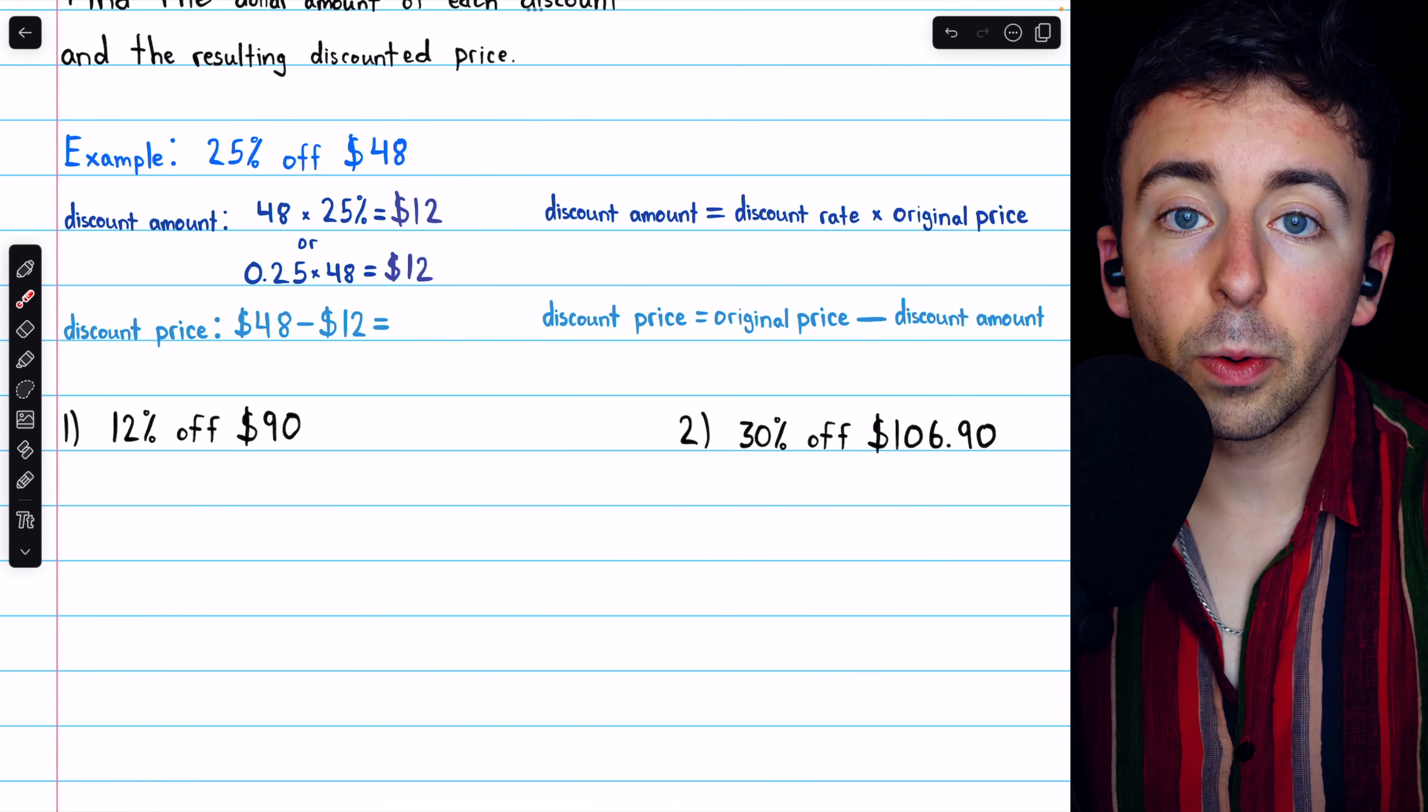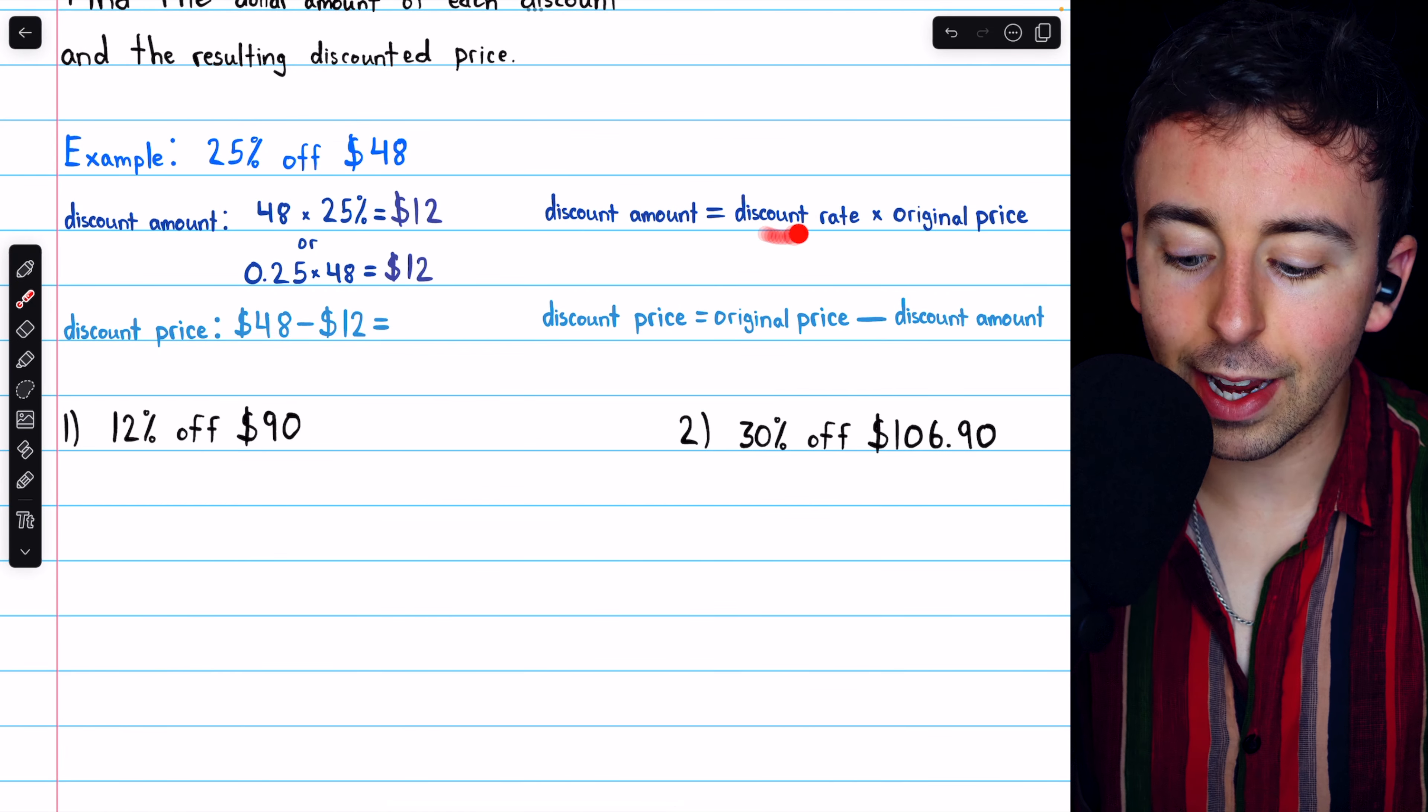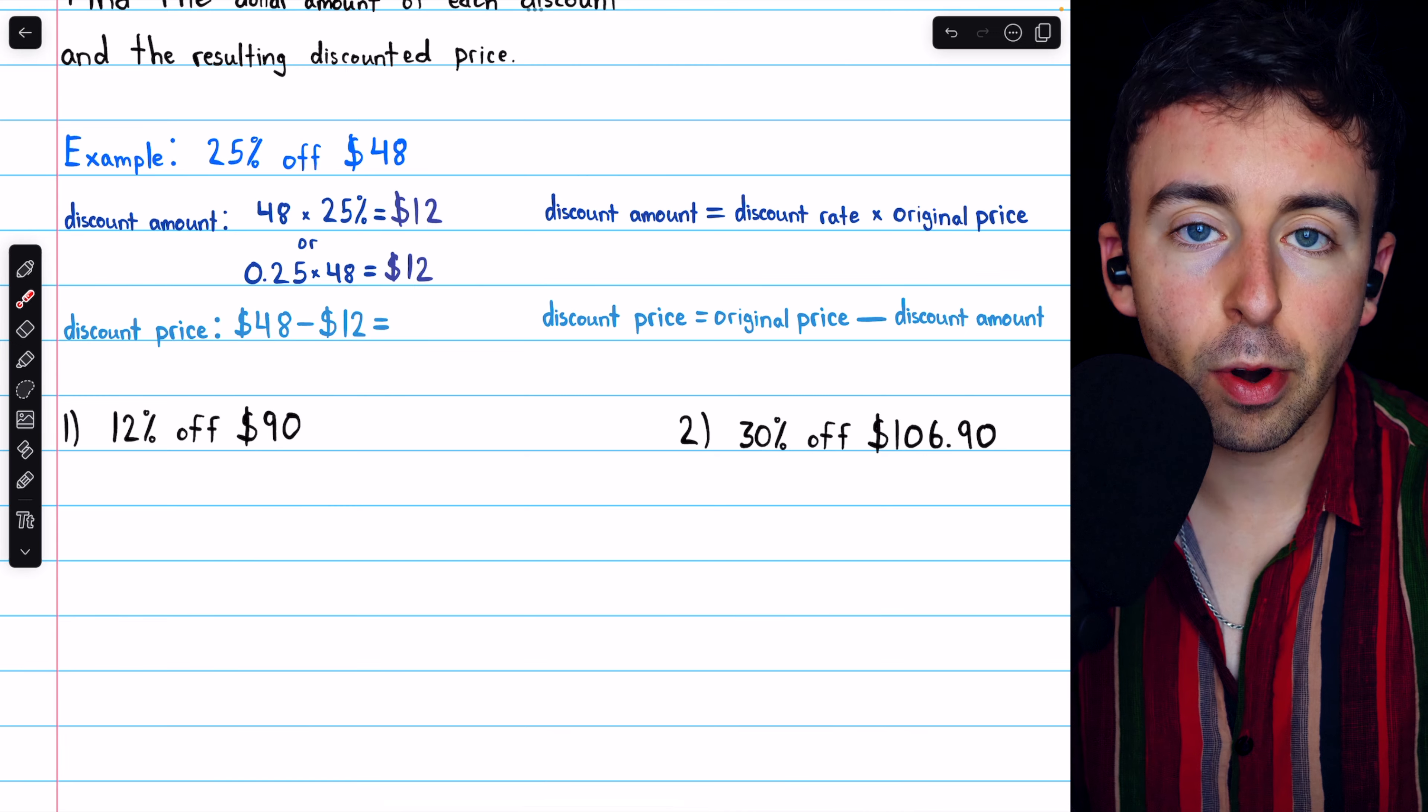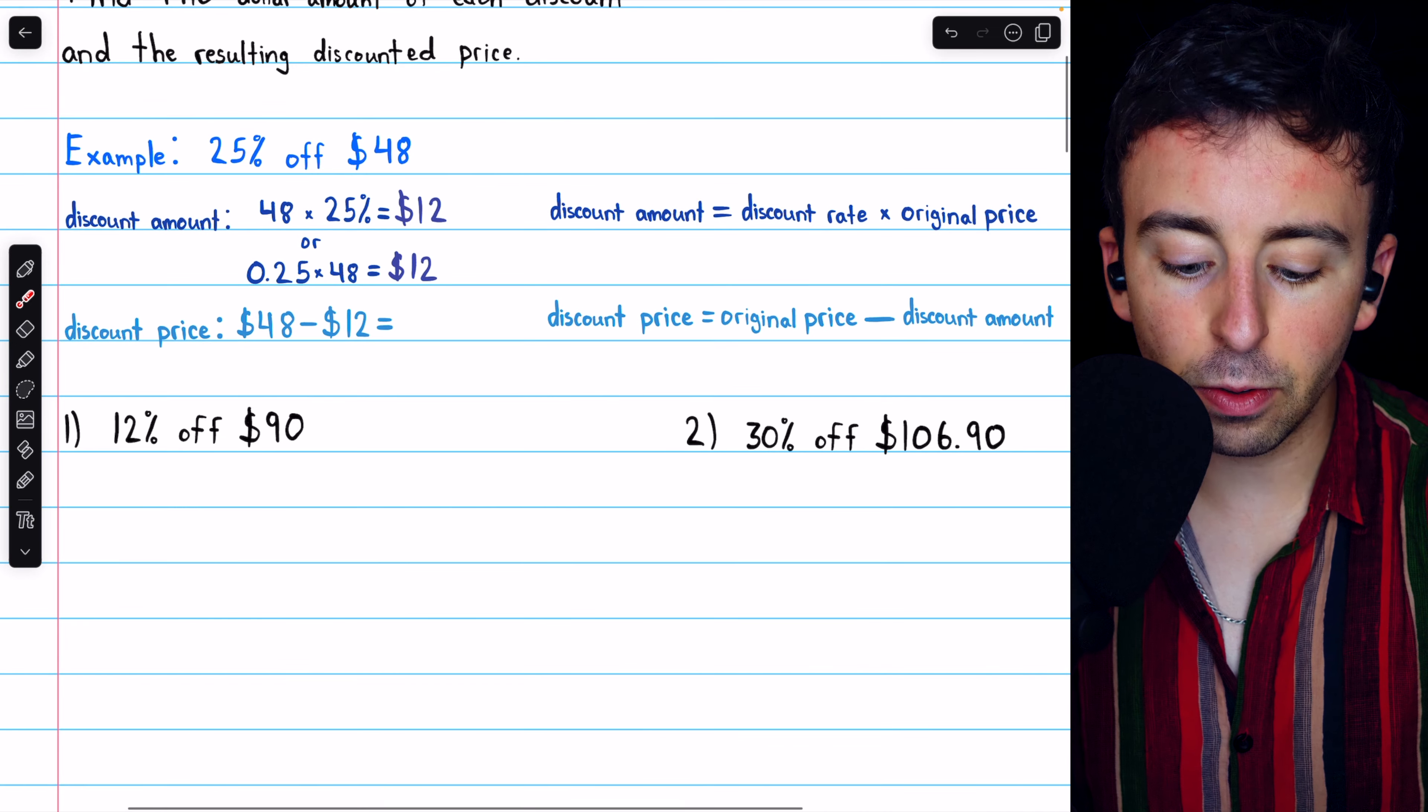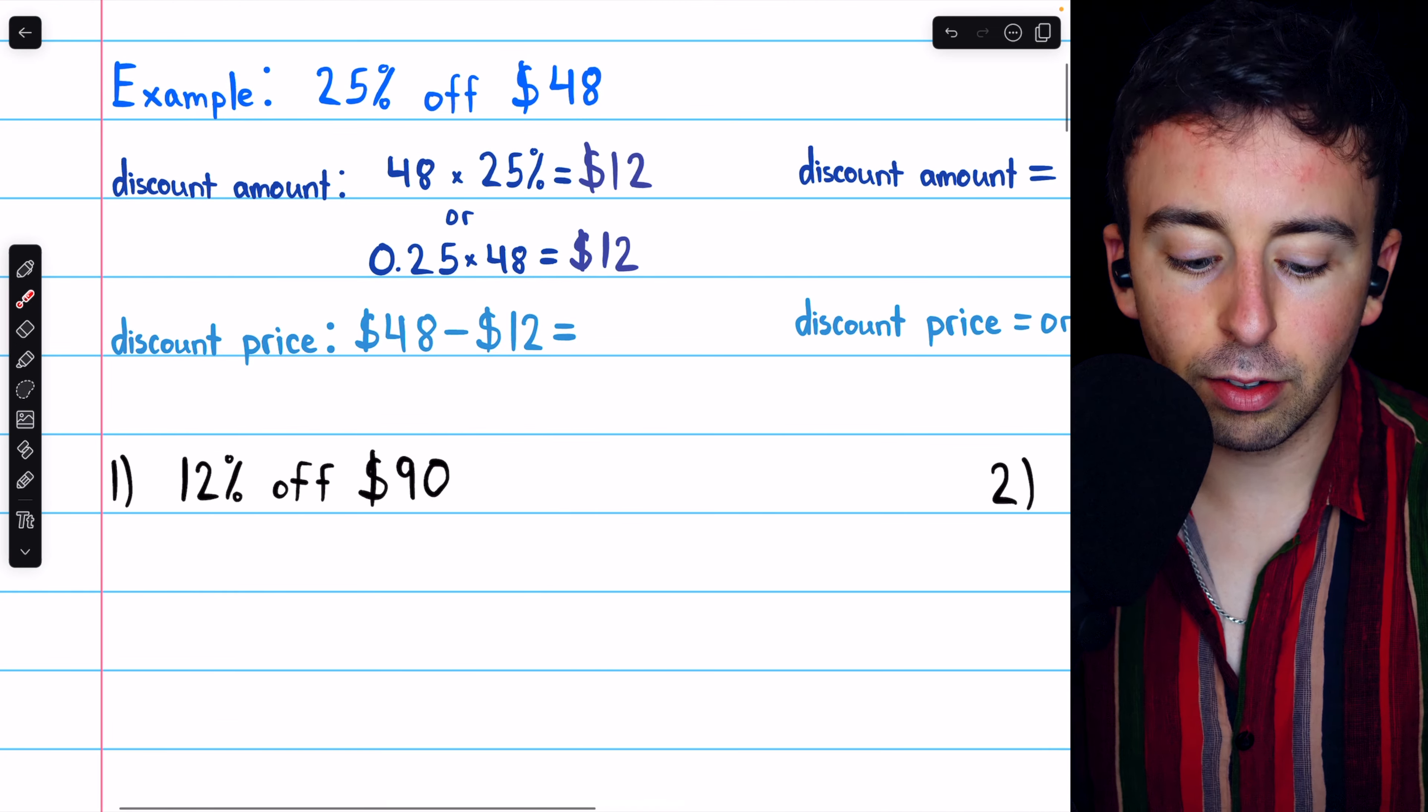So that's how to find the discount amount. Take the discount rate and multiply by the original price. In this case, the discount amount was $12.